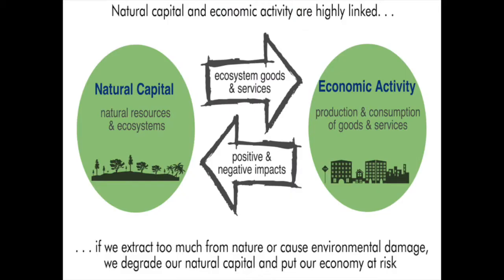A stable or increasing genuine progress indicator means that social and environmental capital upon which all goods and services depend will be equal to or better for the next generation. However, if the genuine progress indicator is decreasing, it shows that progress is eroding social and environmental capital, thereby diminishing resources for future generations.